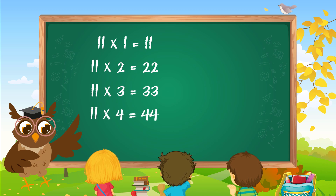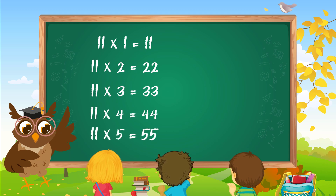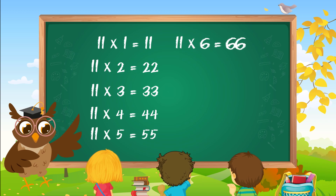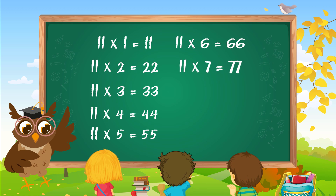11 fours are 44. 11 fives are 55. 11 sixes are 66. 11 sevens are 77.